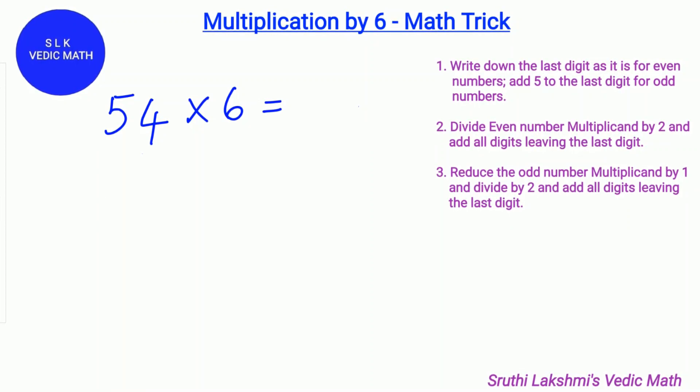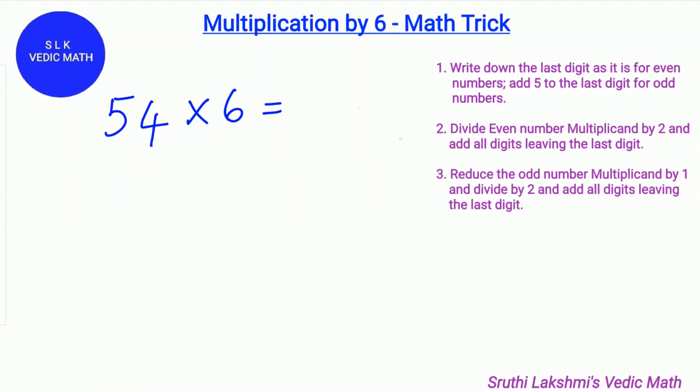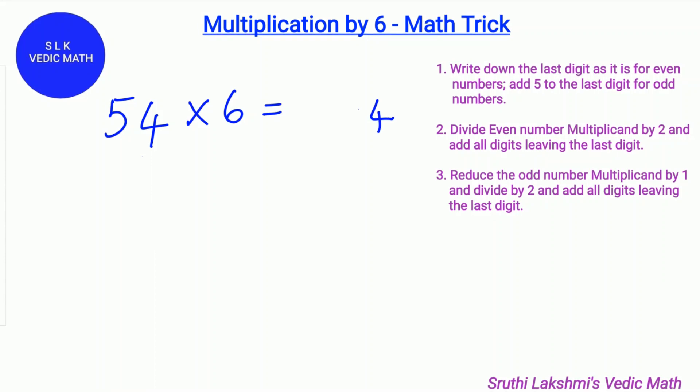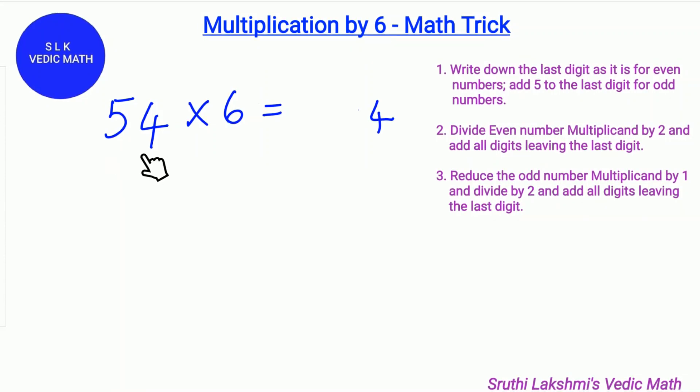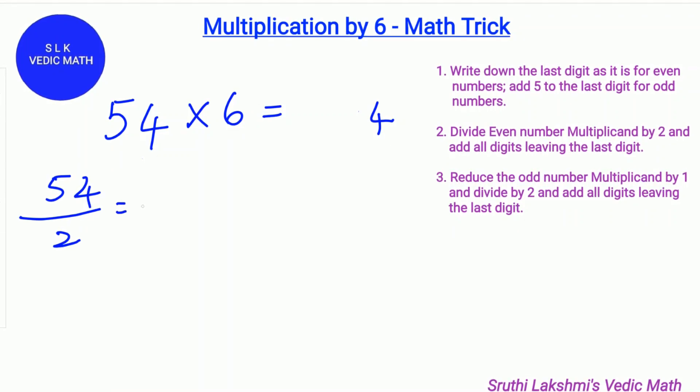Let's try 54 times 6. Since 54 is an even number, we write the last digit 4 down as it is. Next, we divide 54 by 2. So 54 divided by 2 is 27.